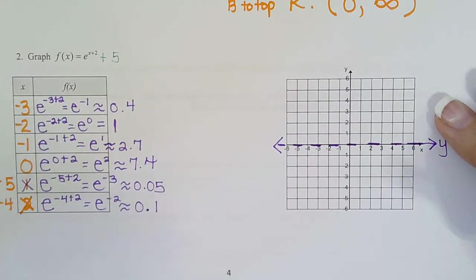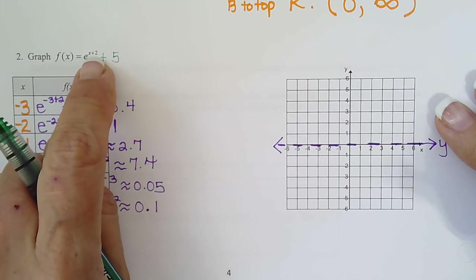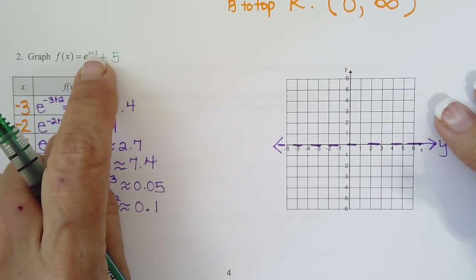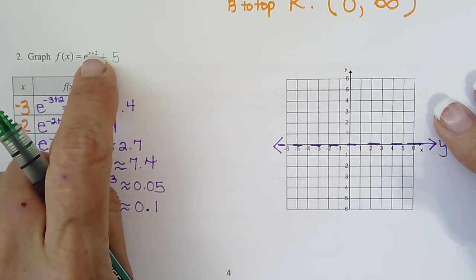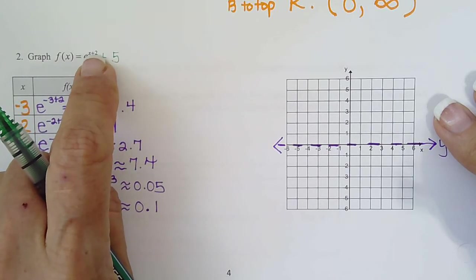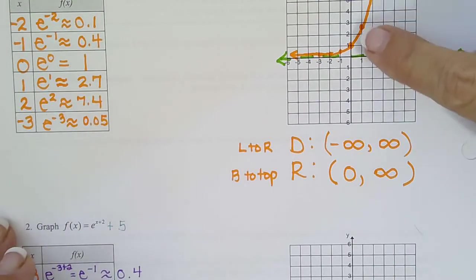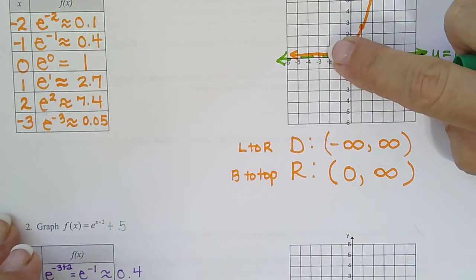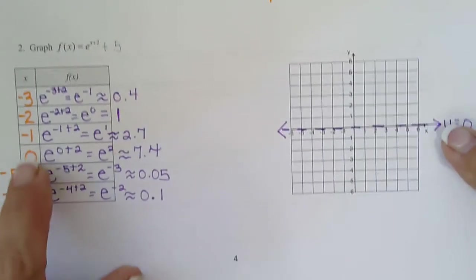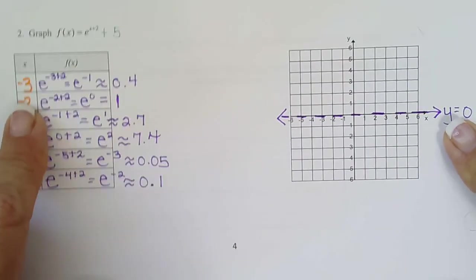We don't have any of that. What we do have is a left-right shift. See how that 2 is with the x? Remember when it's with the x, we do the opposite. So this graph will be 2 to the left of the mother function. Where this one crossed at 0,1, this one's going to cross at negative 2,1 instead, which you can see right here is correct.